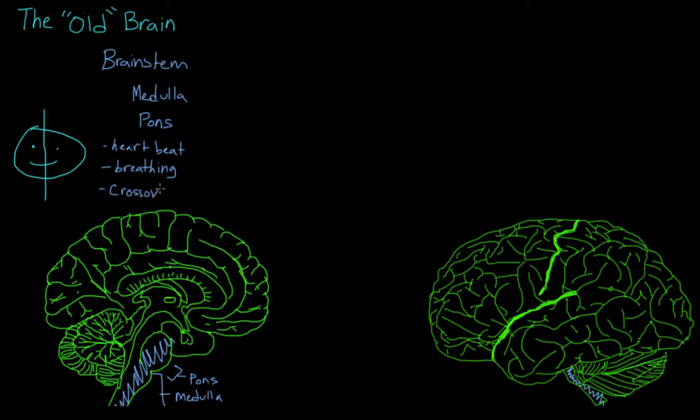But it also serves as a crossover point for our body's nerves. To talk about this, I need to reference the fact that the right side of the brain controls the left side of the body, and the left side of the brain controls the right side of the body. In the brain stem, nerves that are coming in from the left side of our body cross over and move to the right side of our brain. That occurs in the brain stem.